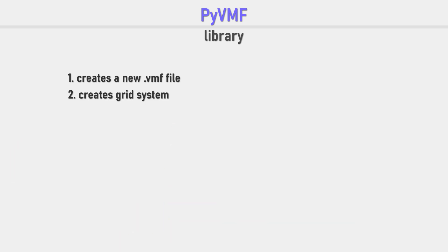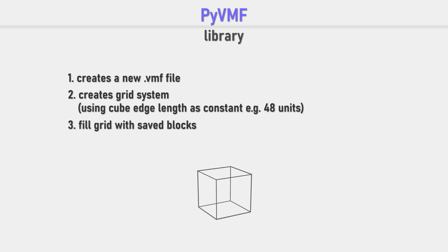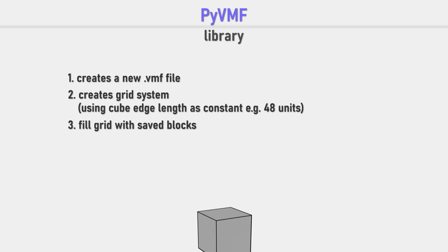But recreating a Minecraft-conform 3D grid is pretty easy. The script only needs a constant to know how long each side that makes a cube should be. I found 48 units to be the closest to an authentic Minecraft feeling. Now it's time to fill in the blocks saved in the list — for that, the script creates a cube at the desired position.